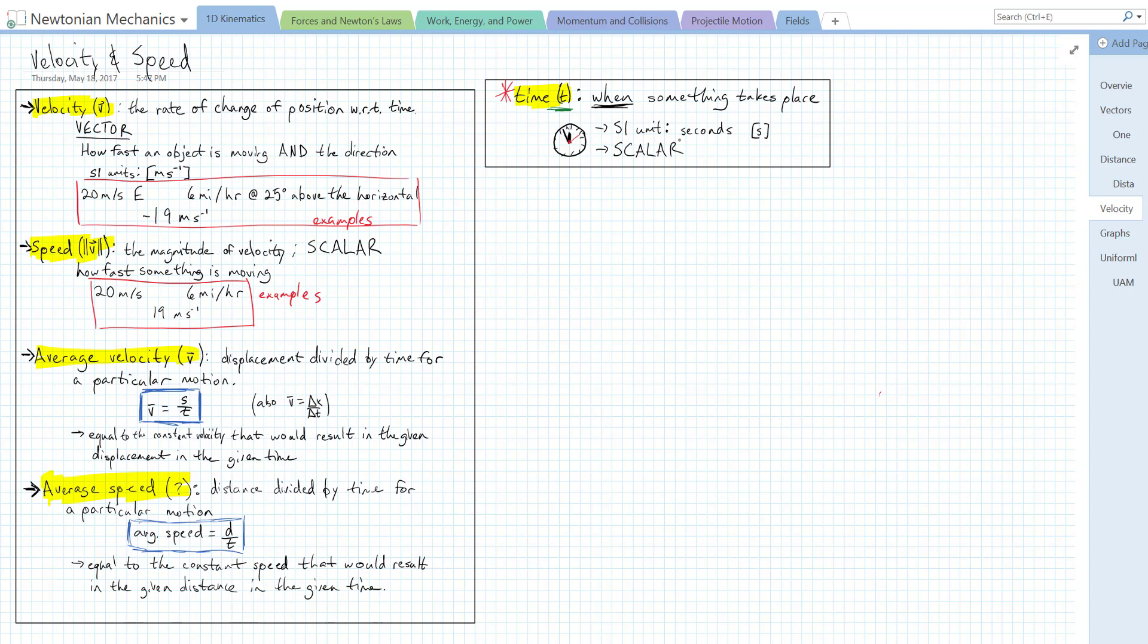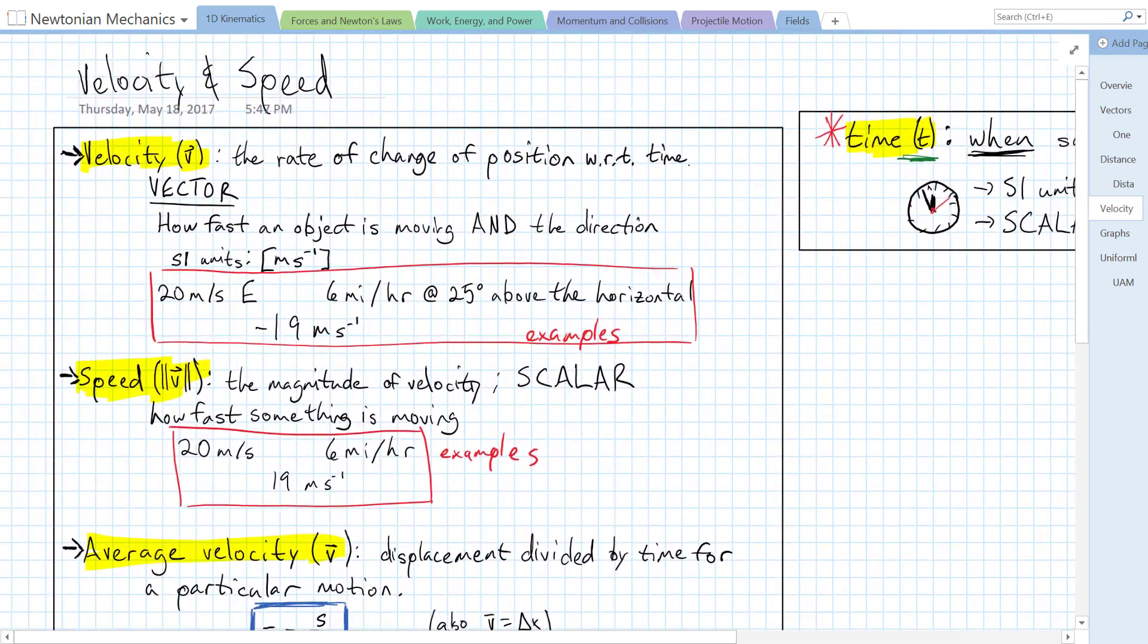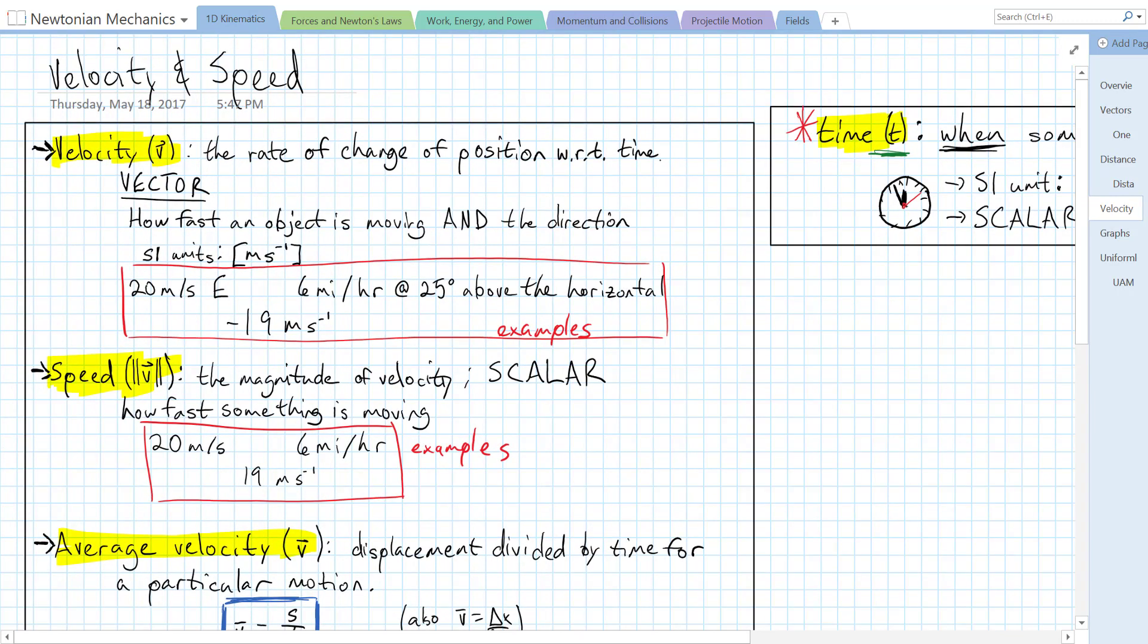Once we have defined time clearly, we can talk about velocity and speed. Now, the more important variable is going to be velocity. The variable we use for velocity is lowercase v. Sometimes we also use lowercase u for initial velocity, but for general velocities, we'll use v.